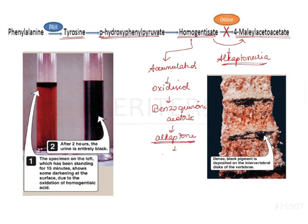Alkapton is nothing but a brown-black pigment. It is because of this pigment that the urine turns black upon standing — when you collect urine, there is an increased amount of homogentisic acid in it. Upon standing, this homogentisic acid gets oxidized, resulting in alkapton bodies. These alkapton bodies, being a brown-black pigment, are what cause the blackening of the urine.